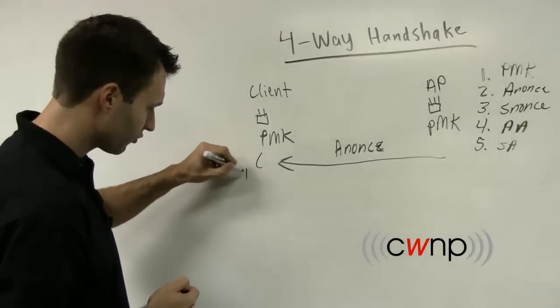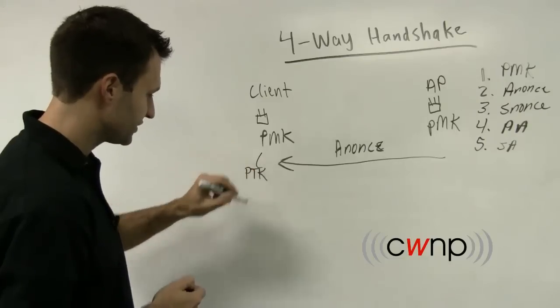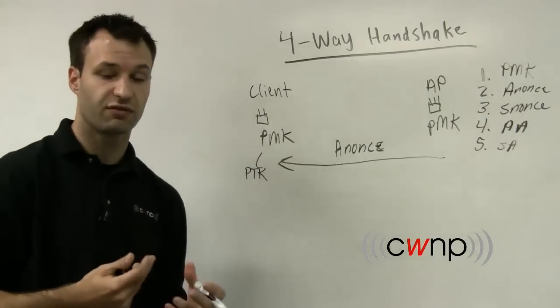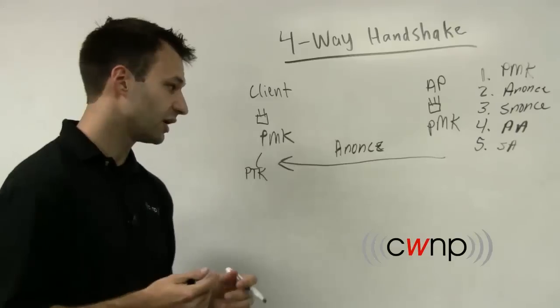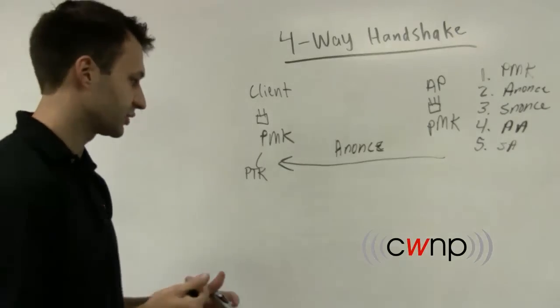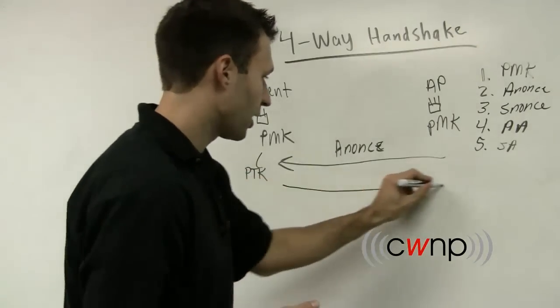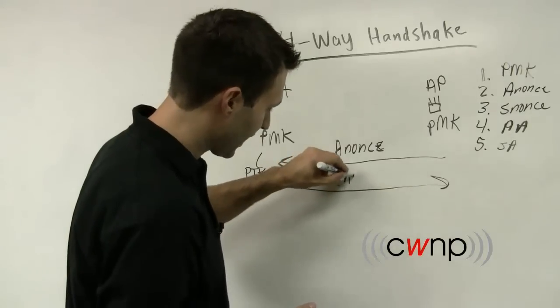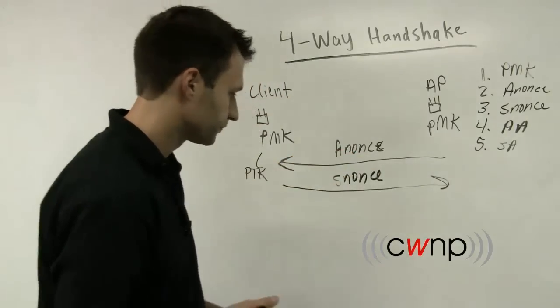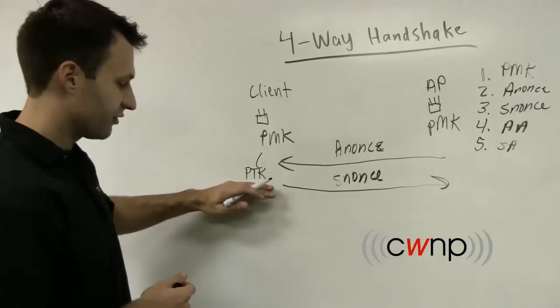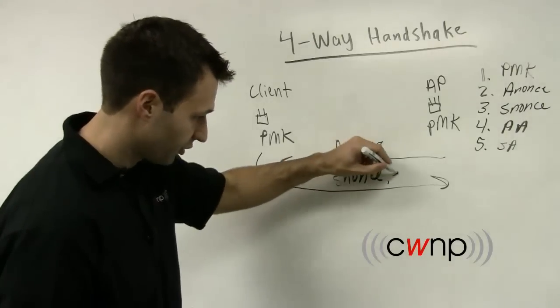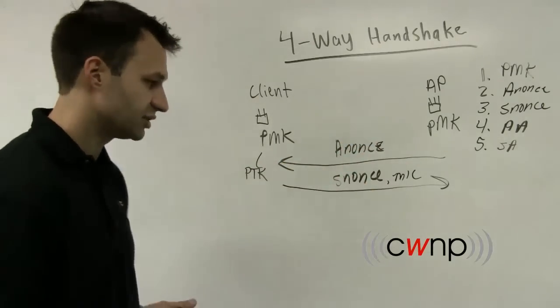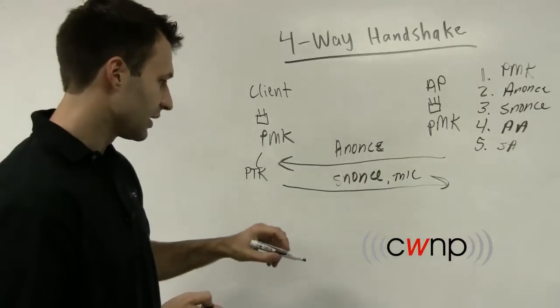So at this point, it's going to derive PTK, which is a set of encryption keys used for different functions with unicast encryption and data protection. It's going to respond to this ANUNCE by sending the access point its SNUNCE. And since it already has derived a PTK, it can actually protect this with a message integrity code.